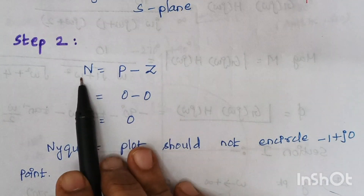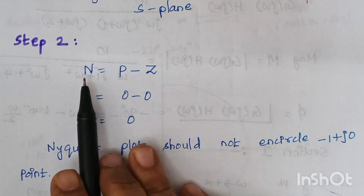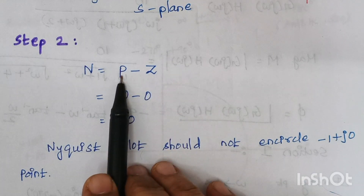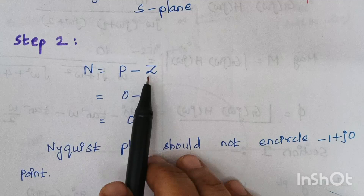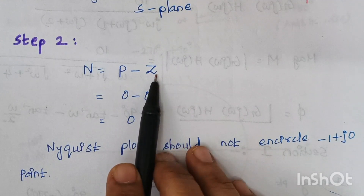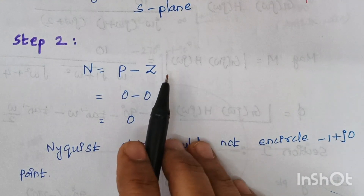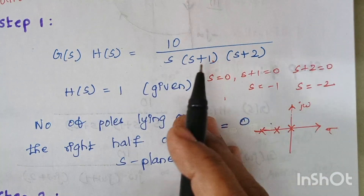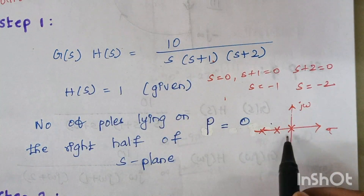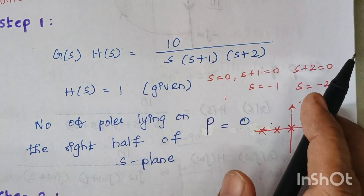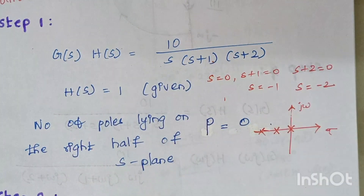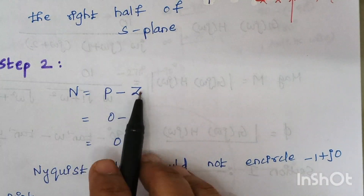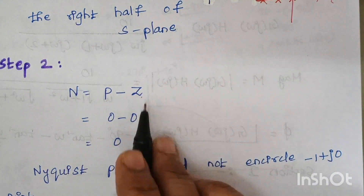The next step: N is the number of encirclements, given by the formula N = P minus Z. P denotes the number of poles lying on the right hand side of the S-plane and Z denotes the number of zeros on the right hand side. Here all poles are on the left hand side — one at the origin, two on the left — and there are no zeros, so both P and Z are zero.